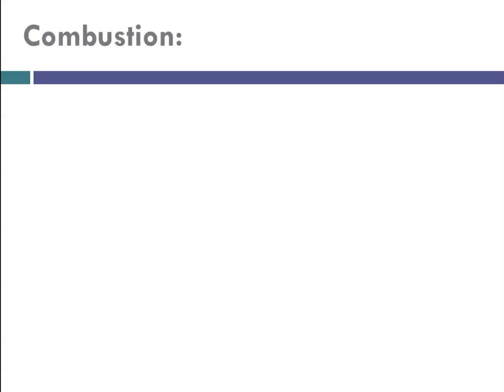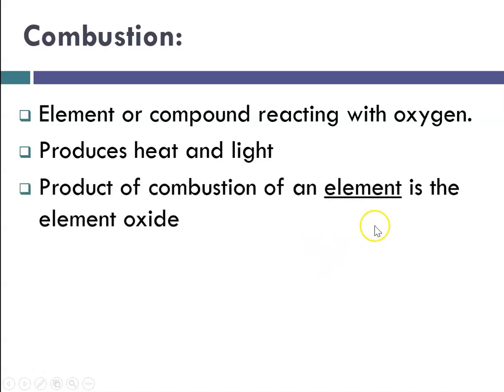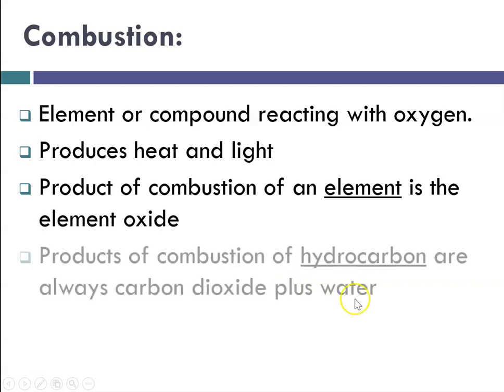So for starters, let's define it. A combustion is when an element or compound is reacting with oxygen, and I mean elemental oxygen, O2. And it always, in addition to whatever products are formed, produces heat and light. The product of a combustion of an element is the element oxide. It combines with oxygen, so that's kind of like a synthesis. And the second type is combustion of a hydrocarbon, and in that case the products are super easy to predict. They're always carbon dioxide and water. So we're going to look at them one at a time.